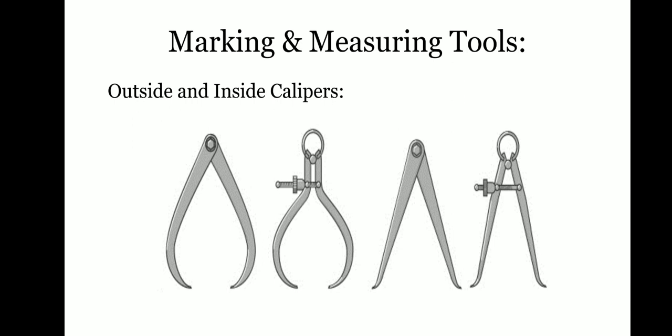The very important type of measuring and marking tools are the calipers. A caliper is a device used to measure the distance between two opposing sides of an object. A caliper can be as simple as a compass with inward and outward facing points. The tips of the caliper are adjusted to fit across the points to be measured. The caliper is then removed and the distance read by measuring the tips with a measuring tool such as a ruler.